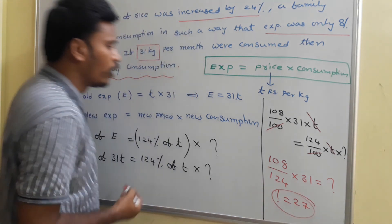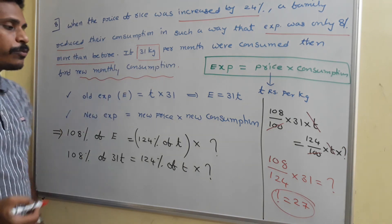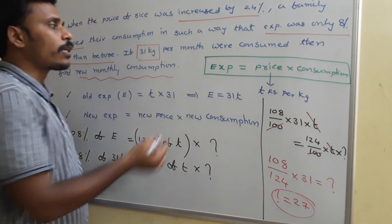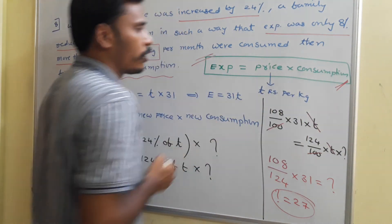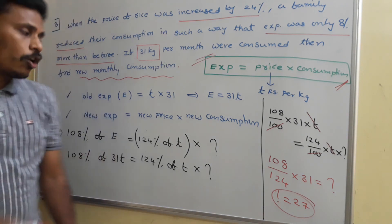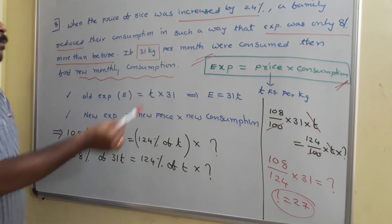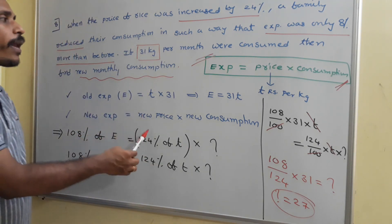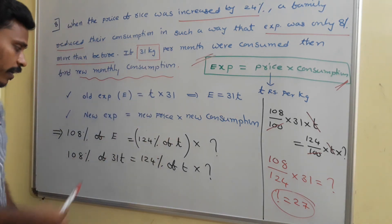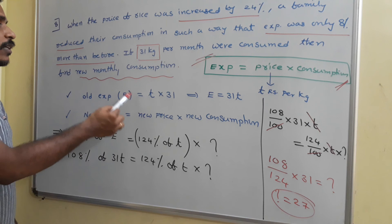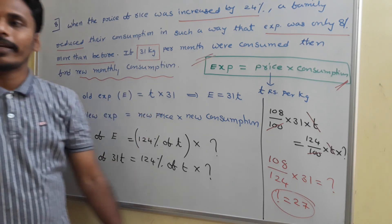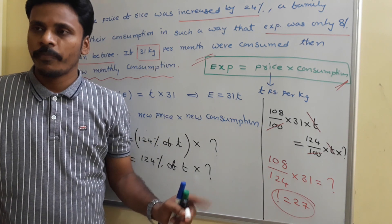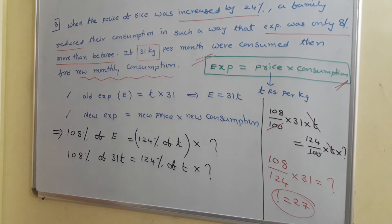To summarize problem 8: the fundamental logic is expenditure equals price into consumption. Old expenditure is price into consumption = 31t. New expenditure is new price (124% of t) into new consumption. That new expenditure equals 108% of old expenditure. Solving gives new consumption as 27 kgs. Go for a screenshot. Thank you.